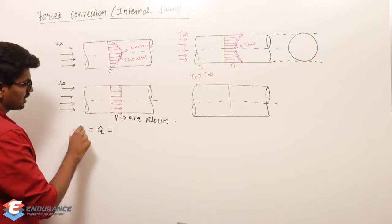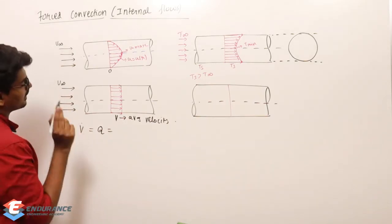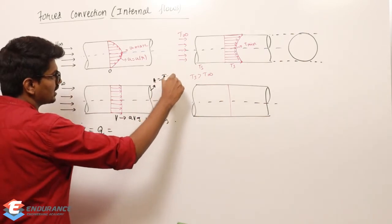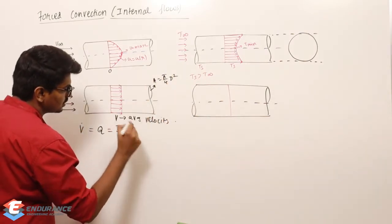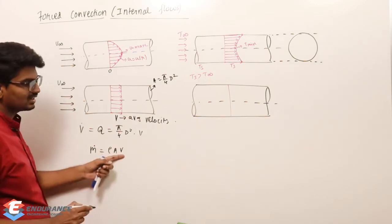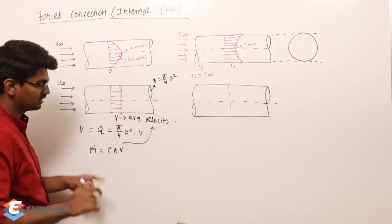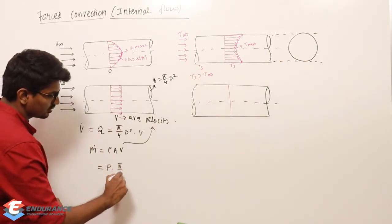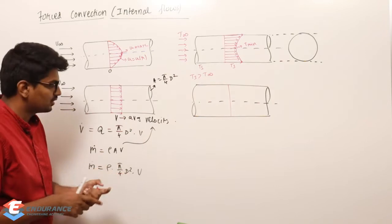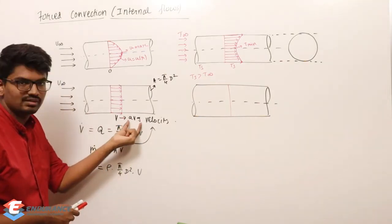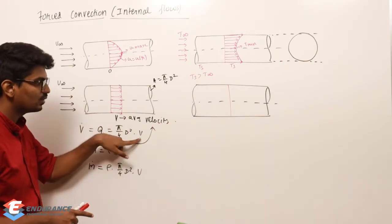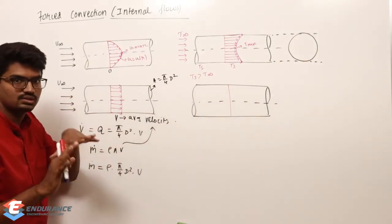The volume flow rate V_dot equals area times velocity: (π/4)D² × V. Mass flow rate is ρAV, which equals ρ × (π/4)D² × V, where V is the average velocity. We find V by equating the discharge calculated from the average velocity with the discharge calculated using the actual velocity profile. This gives us the relation between V and V_max.